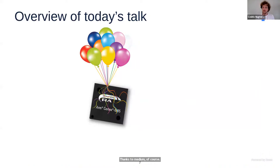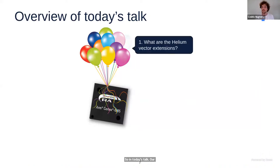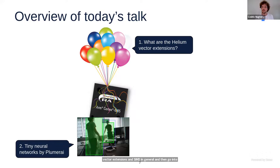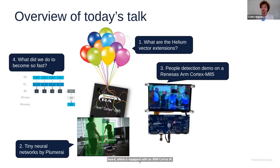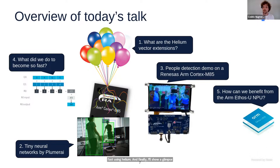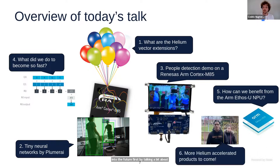In today's talk, I'll first say a few words about vector extensions and SIMD in general, then go into the details of Arm Helium. I'll then say a few words about our neural networks and how we make them so small and efficient at Plumeri. I'll show a demo on a Renesas board equipped with an Arm Cortex-M85, go into technical depth on our Helium optimizations, and show a glimpse into the future including the Arm Ethos-U NPU and more exciting applications.